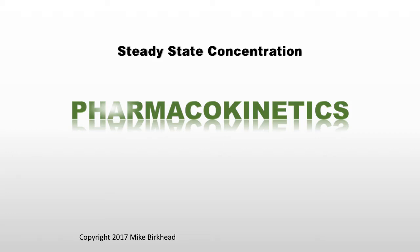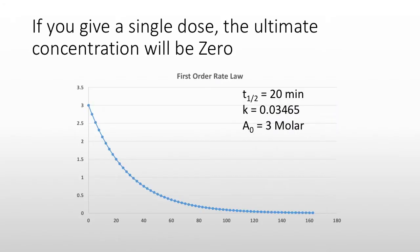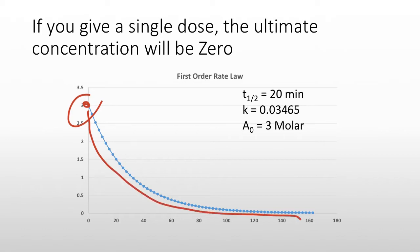We want to get to an understanding and equation for steady state concentration. If we give a dose of a medication at time zero, and we know the dose and volume of distribution, we get the concentration over time — it follows first order kinetics to zero.